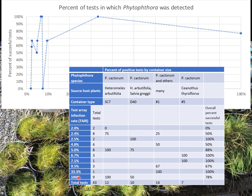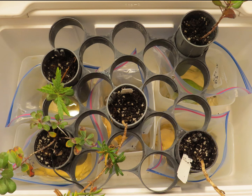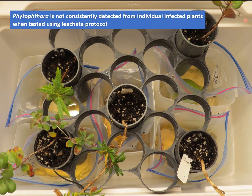You'll see that the last set, where we have 100% infection in the array, totally makes sense. But these are all single-plant tests. One thing we learned from single-plant tests is that Phytophthora is not consistently detected when tests from the same plant are done repeatedly. If we take a plant and test it one week, then the next week and the next week, we don't necessarily always get a positive result.